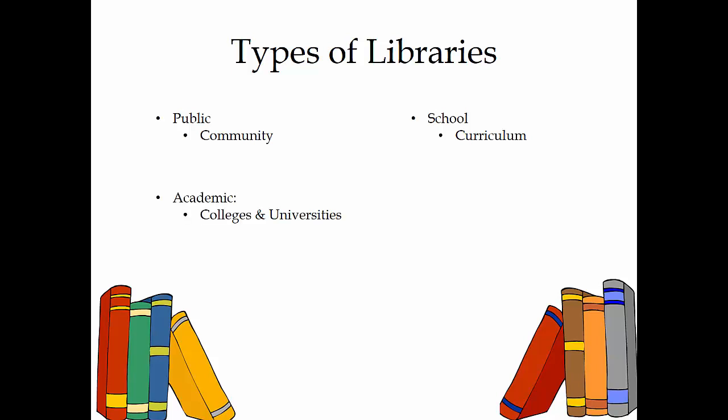Academic libraries are simply school libraries for institutions of higher education, so their programs, collections, and services are developed to support the programs of study at the institution. For example, since ISU has a strong health science program, we have a collection of materials to support the health science programs. Obviously, the more advanced programs of study have more advanced materials to support the programs of the institution.